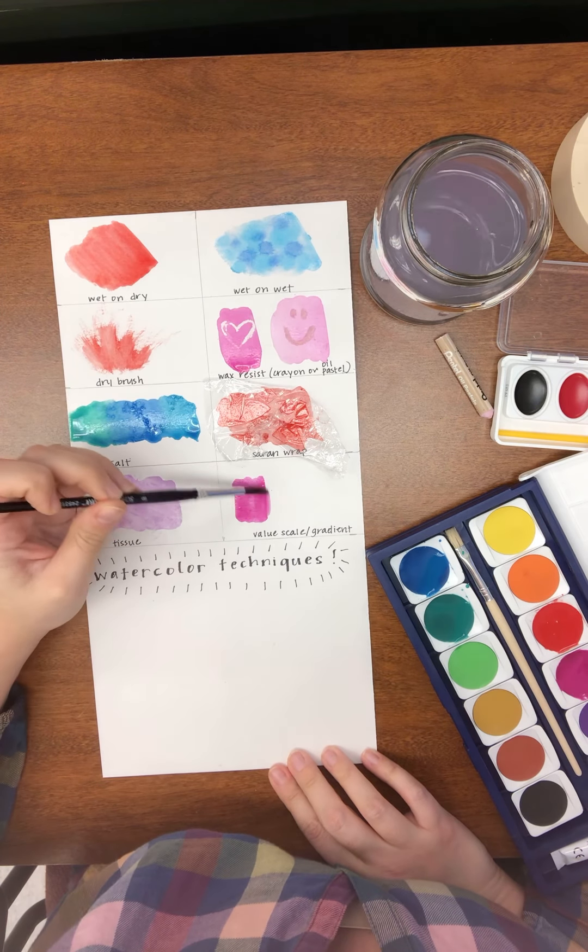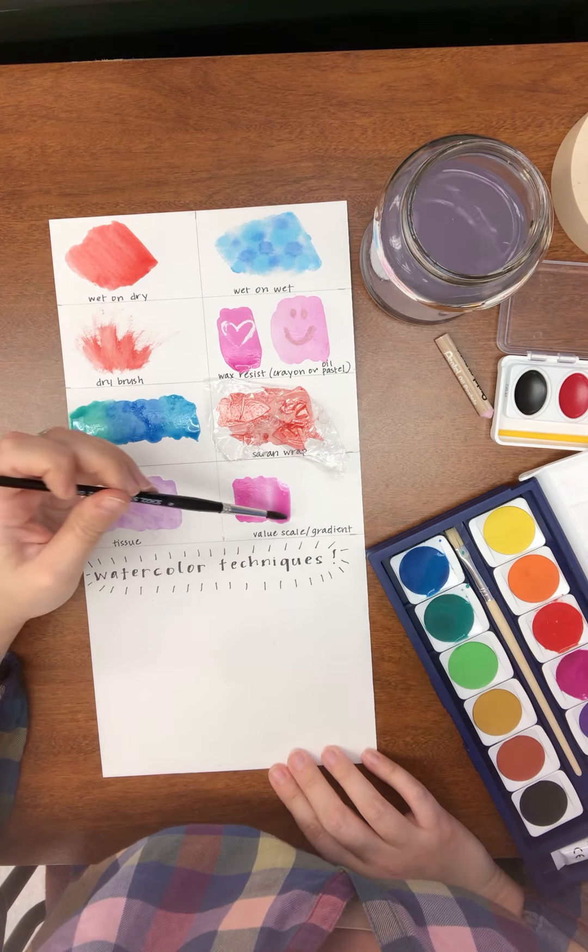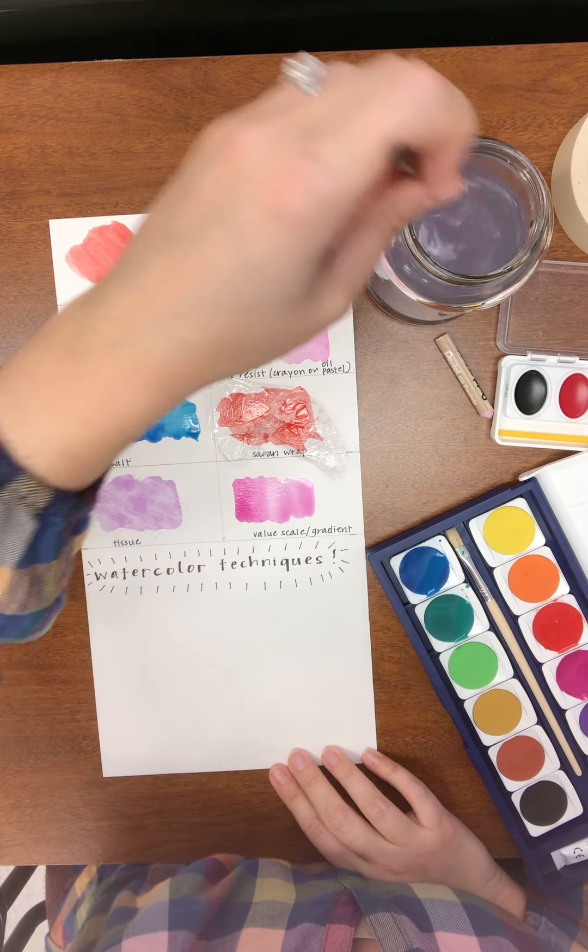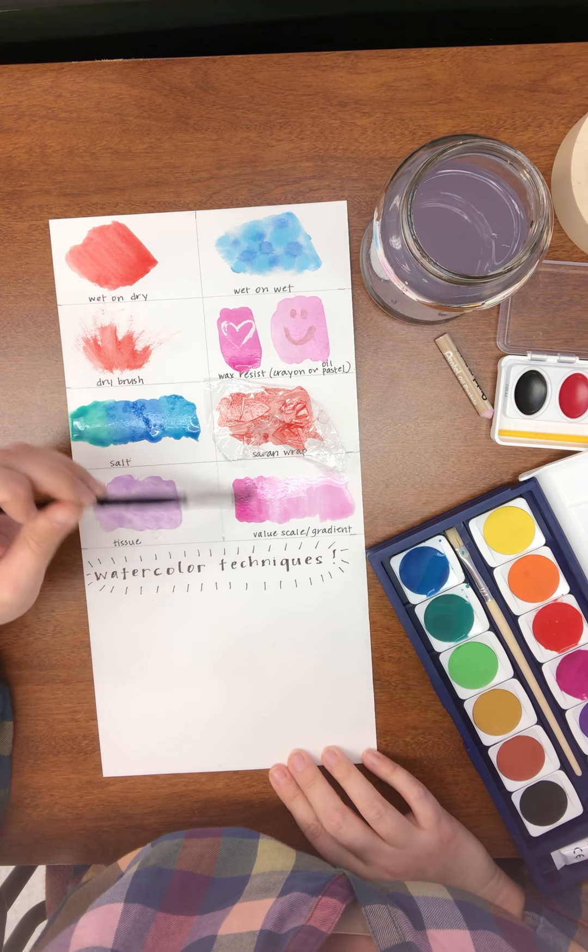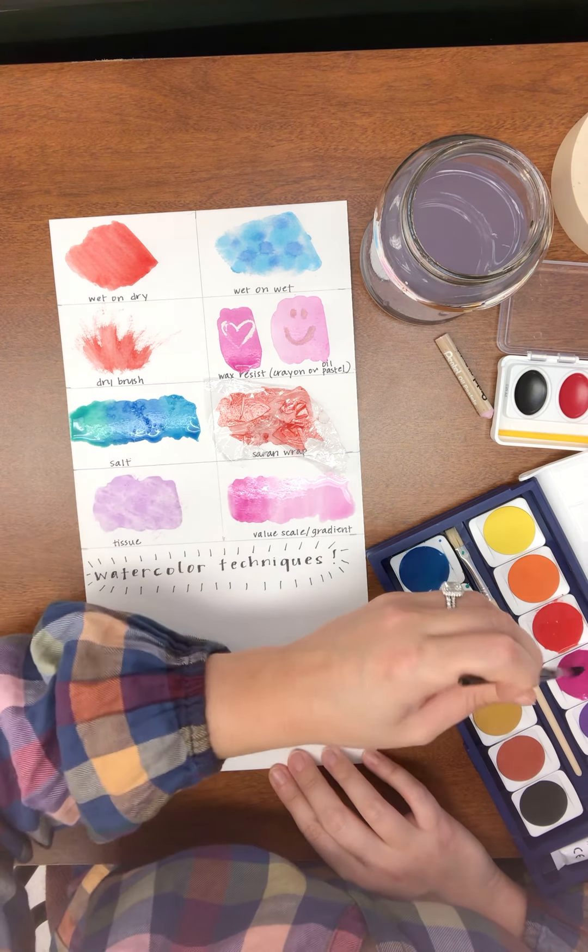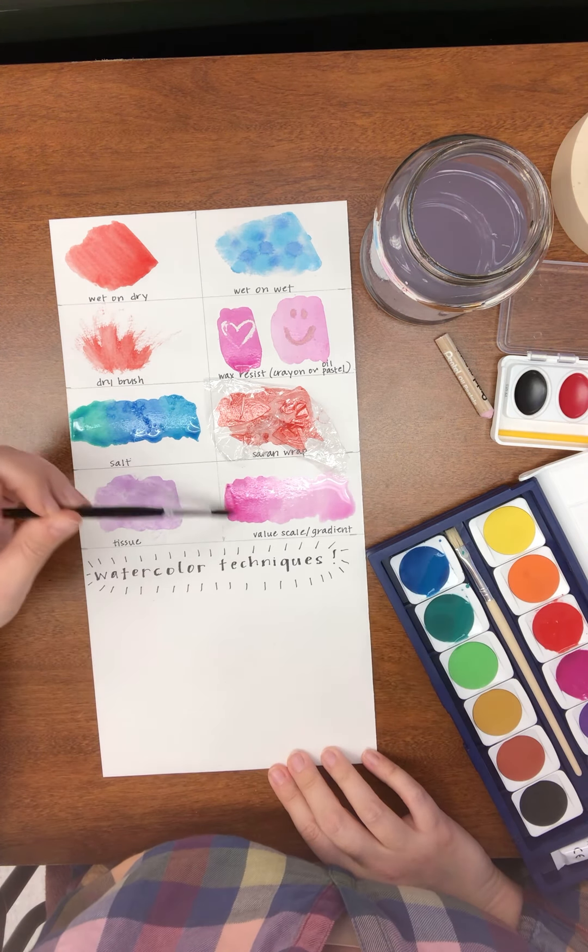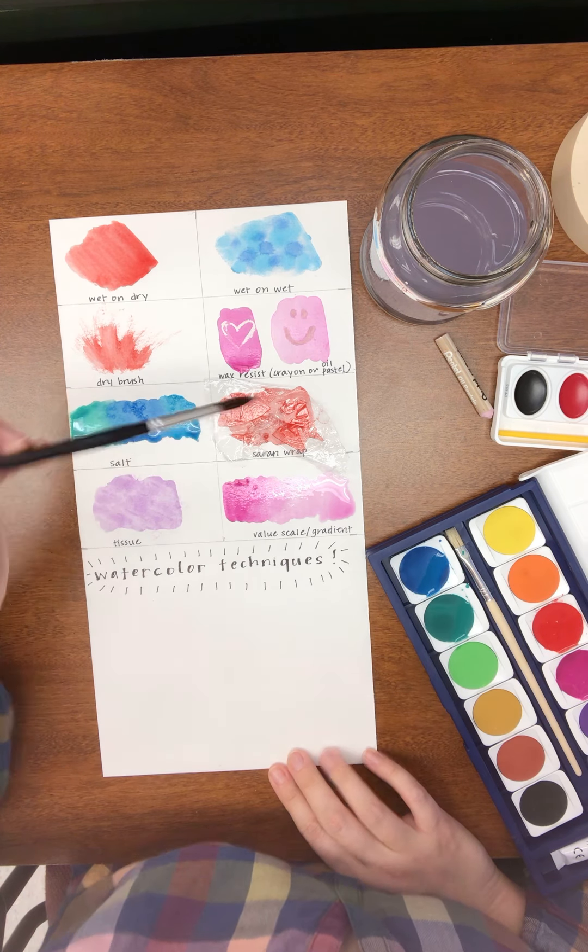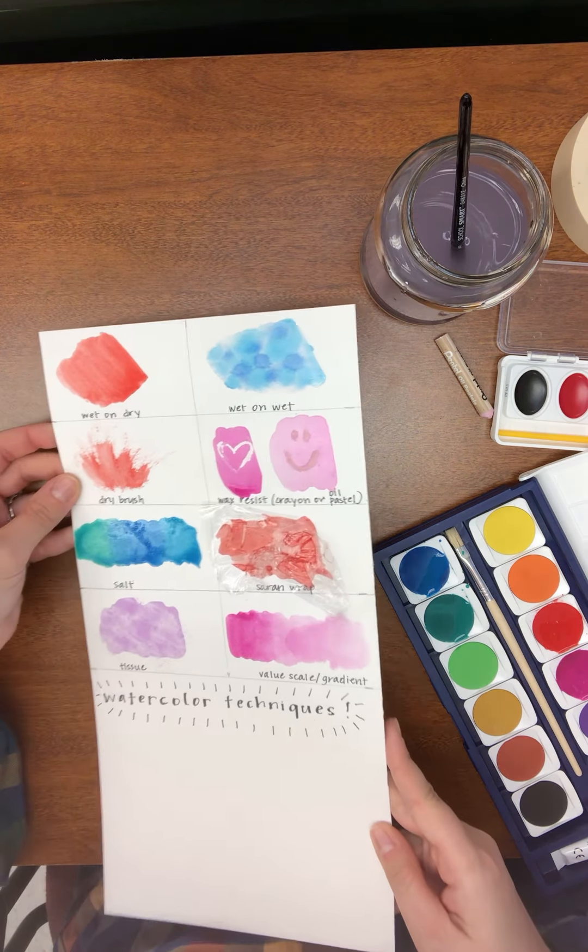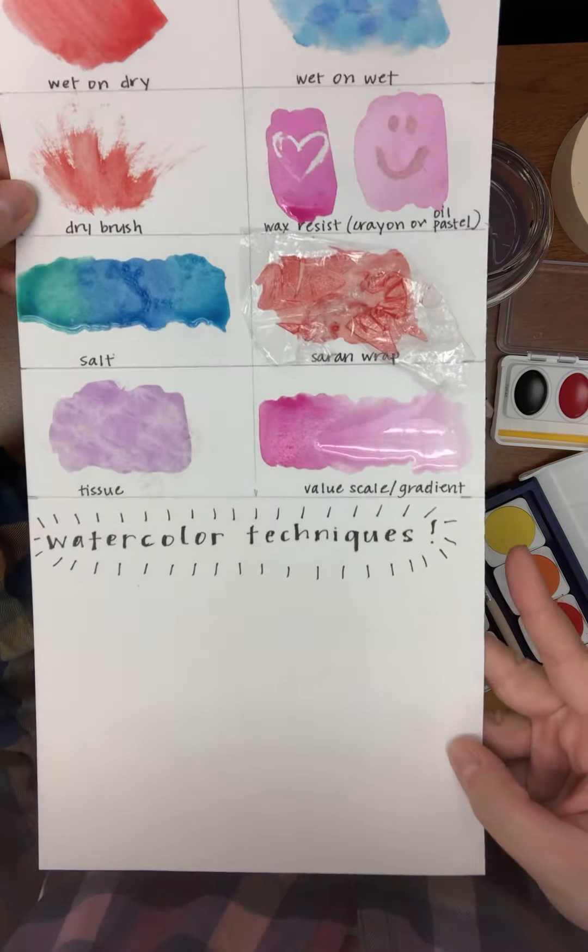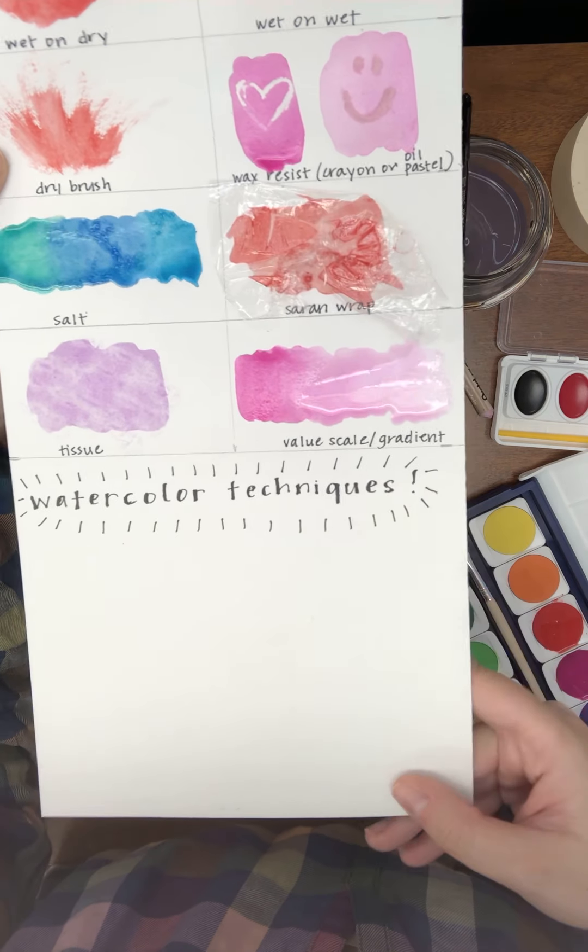And what that's going to do is create this really beautiful gradient that goes from dark to light. I can go back and add more pigment at the end to make it even darker. And just like that, I'll let it drip a little bit. Just like that, I've created a gradient just by adding more and more water to my watercolor.